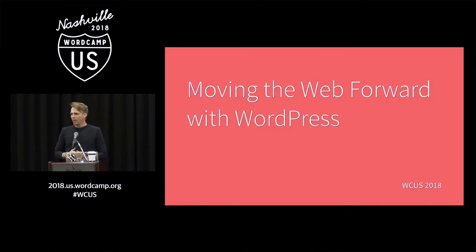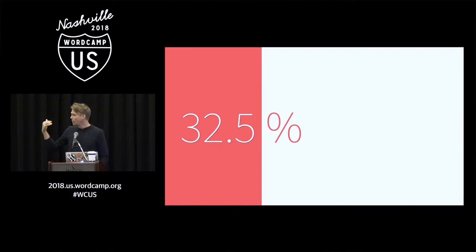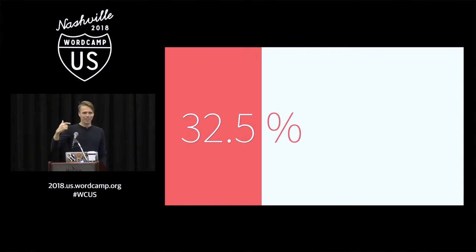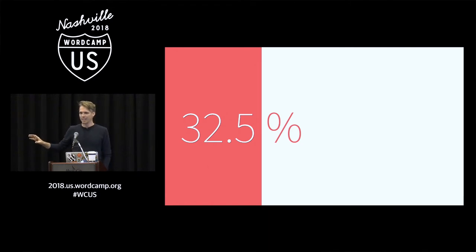I want to talk to you about how we can use WordPress to move the web forward. We keep talking about this number — the ever-increasing, incremental, probably-wrong-because-the-stat-updated-this-morning number of like 26%, 25%, 27%, 32%, 32.5%. That was Thursday, so I guess it's probably 32.56% or something like that today.